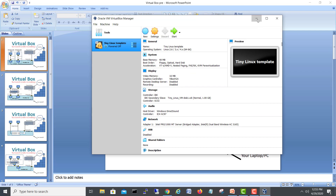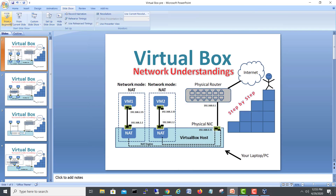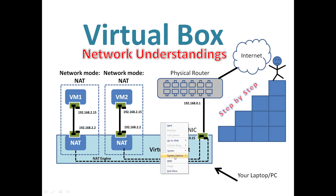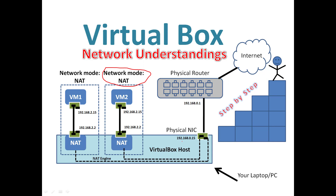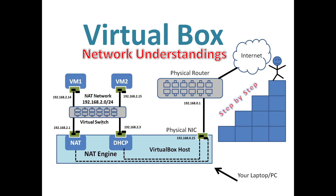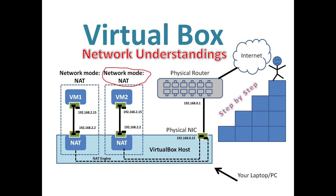Let's understand them one by one. I'll go to my slideshow. The first mode is NAT. In NAT mode, when you have two virtual machines, there is an internal NAT system that assigns IPs — for example 10.0.2.15 — to each VM in a similar range. Traffic goes through NAT and then out to the network. This is the NAT-only network mode.